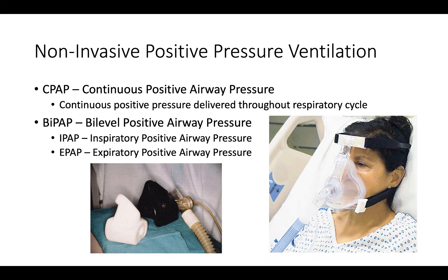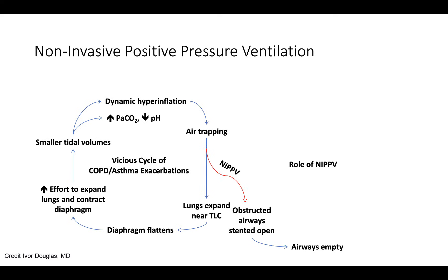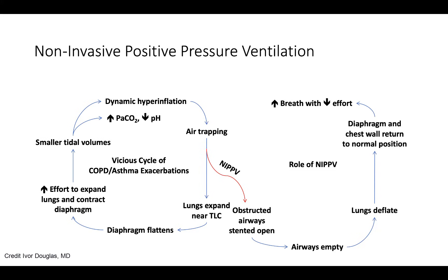Why does non-invasive positive pressure ventilation help in a COPD exacerbation? Non-invasive positive pressure ventilation stents open the obstructed airways. As these airways are stented open, they are allowed to empty during exhalation. Therefore, the lungs deflate and the diaphragm and chest wall return to a more normal, physiologic position. As the muscles of respiration return to their normal position, the patient can then take a larger breath with less effort. A larger tidal volume causes PCO2 to decrease and pH to increase, while larger breaths with less effort also reduce respiratory rate and the patient's dyspnea. This cycle continues while inhaled bronchodilators and systemic steroids are allowed to work.